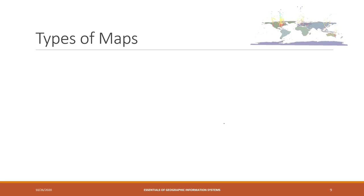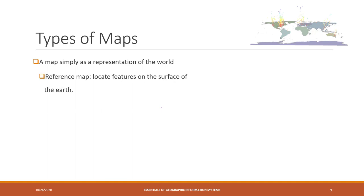Let's talk about different types of maps. A map simply is a representation of the world — of the culture and also of the physical world. Based on our textbook, maps are classified into three types.